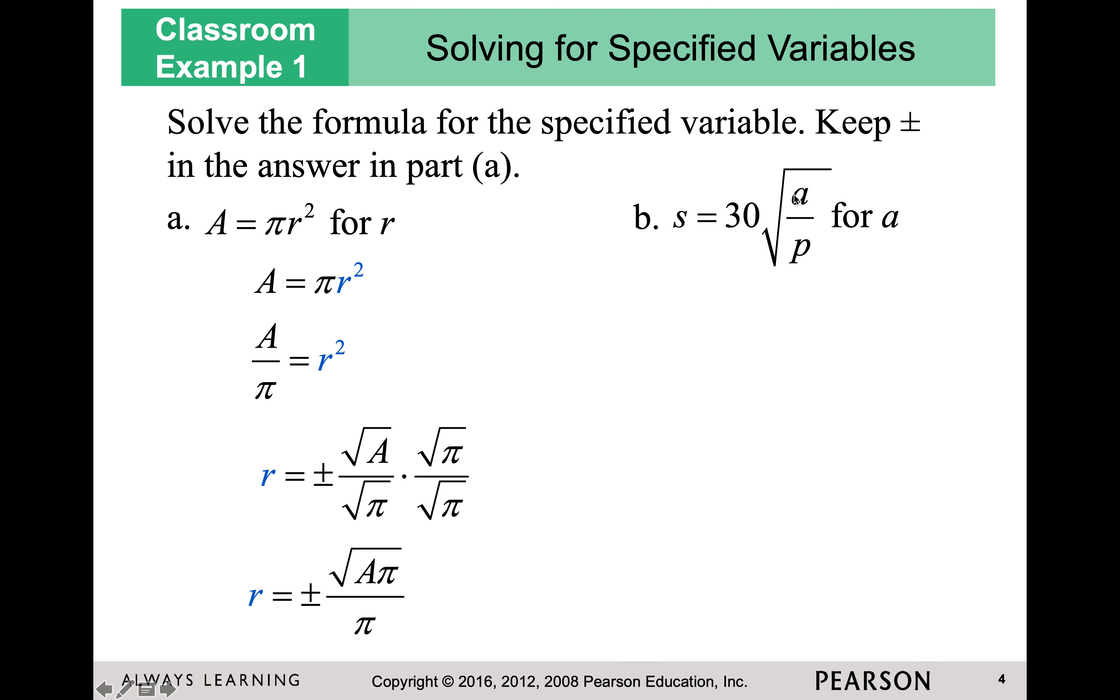In part b, I want to get a alone. So the first thing that I would do to get a alone is to go ahead and square both sides to get rid of the root. You could divide both sides by 30. That is okay. Either way would get us there. But we're definitely going to have to get rid of the square root.